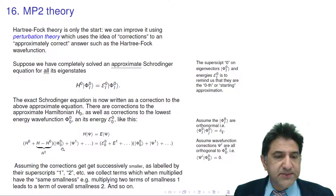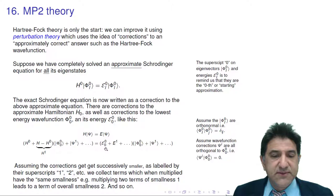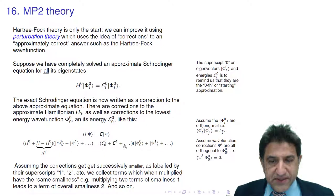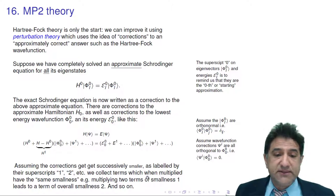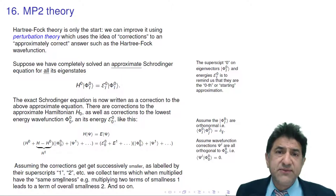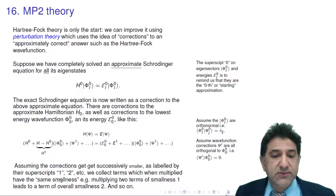We can collect together all terms of similar smallness. Terms with superscript zero give back the original equation. Terms where the sum of superscripts adds up to one have smallness one, because something of smallness zero times smallness one gives smallness one. Something of smallness one times smallness one gives smallness two, and so on.